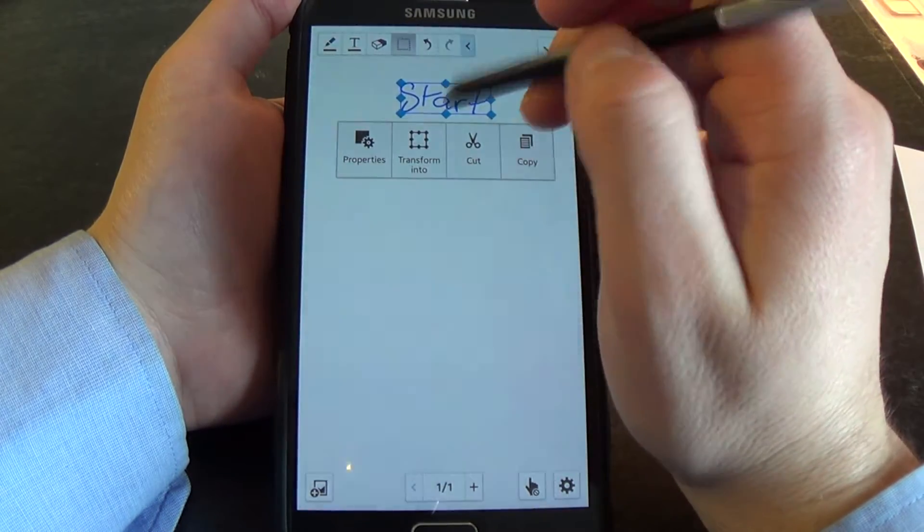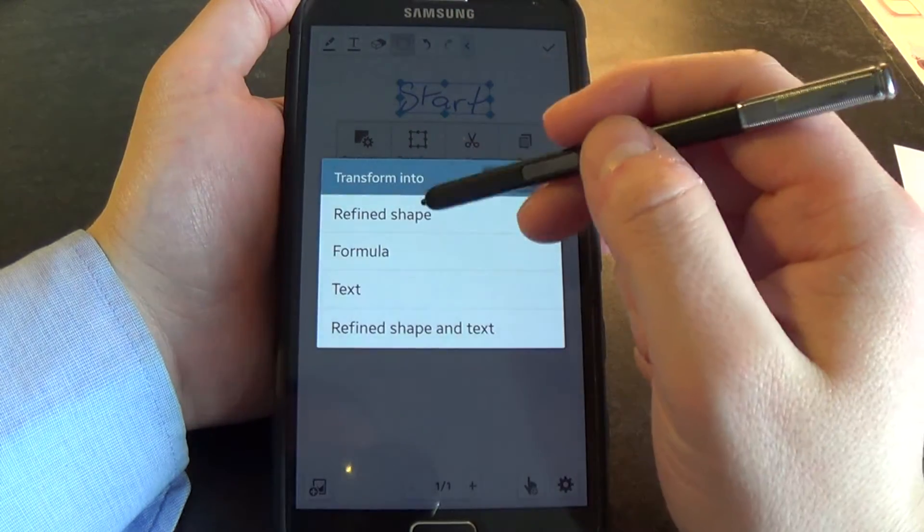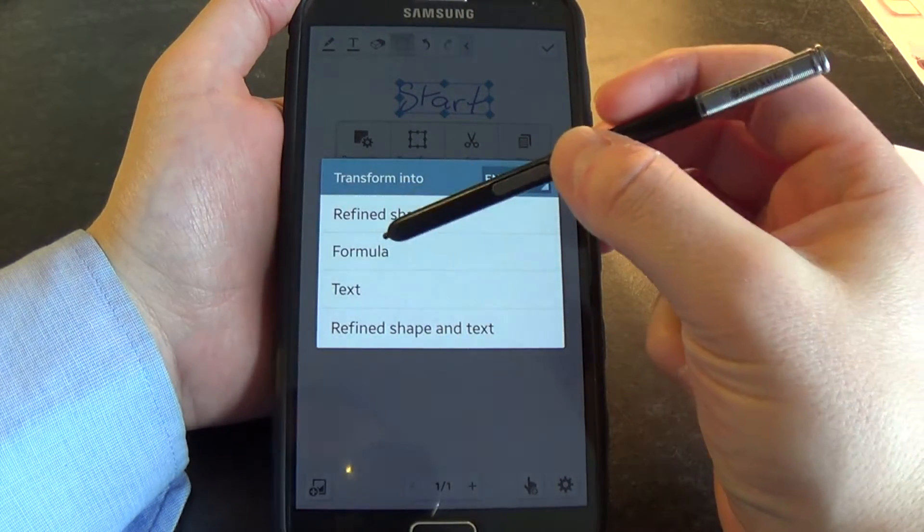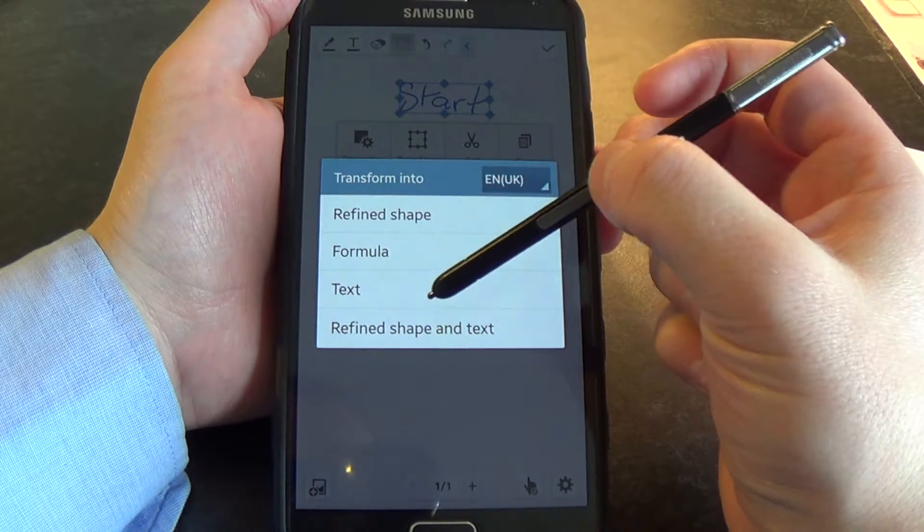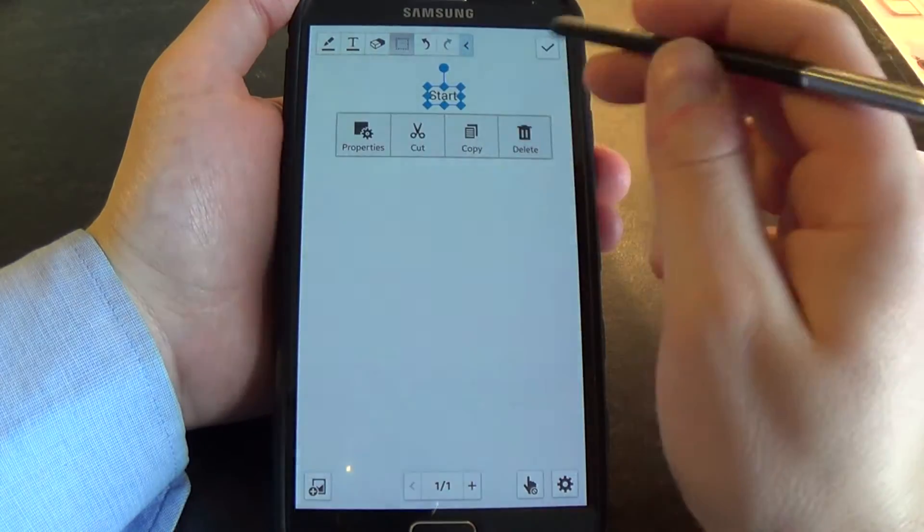One that I found really useful is this Transform Into. If I use that, I have a couple of options here. I can transform it into Shape, Formula, Text, or Redefine Shape and Text. So I'm just going to go with Text for example. And you can see there, it's converted my messy handwriting into printed text.